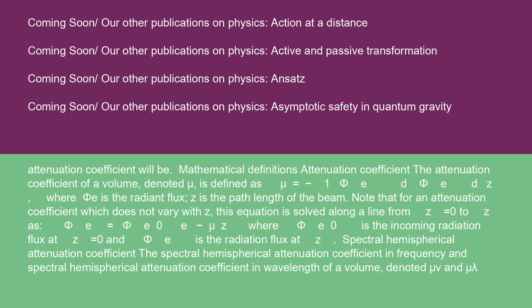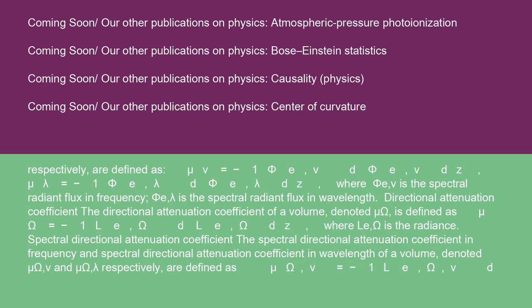The spectral hemispherical attenuation coefficient in frequency and in wavelength of a volume, denoted μ_ν and μ_λ respectively, are defined as: μ_ν = −(1/φ_{E,ν})(dφ_{E,ν}/dz) and μ_λ = −(1/φ_{E,λ})(dφ_{E,λ}/dz), where φ_{E,ν} is the spectral radiant flux in frequency and φ_{E,λ} is the spectral radiant flux in wavelength.